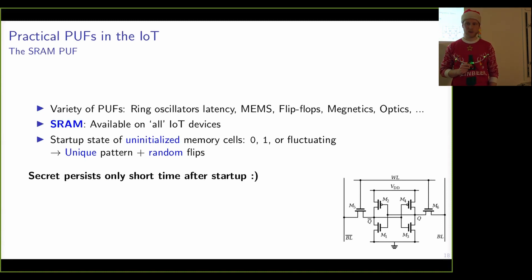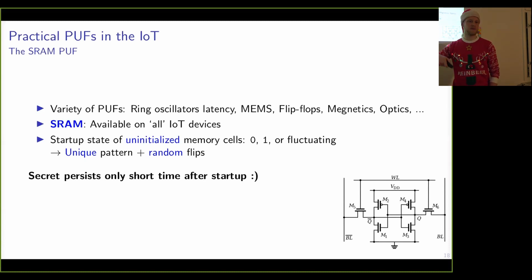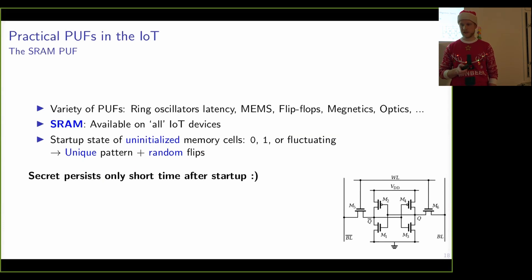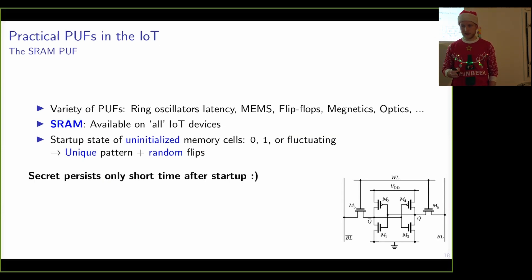Most notably, another PUF source is SRAM, available on almost all IoT devices. The startup state of uninitialized SRAM memory cells is unpredictable. When powered on, some cells always tend to logical 1, others always tend to logical 0, and a certain amount fluctuate — this is the aforementioned noise in the PUF response. Many memory cells together form a device-unique pattern. The cool thing is that the secret value only persists for a very short time directly after power-on; it doesn't need to be stored in non-volatile memory. While the device is asleep — the prevalent state of an IoT device to save battery — it is built into the physical structure but not stored in any memory. During operation, the OS has long overwritten the memory used to form the secret.